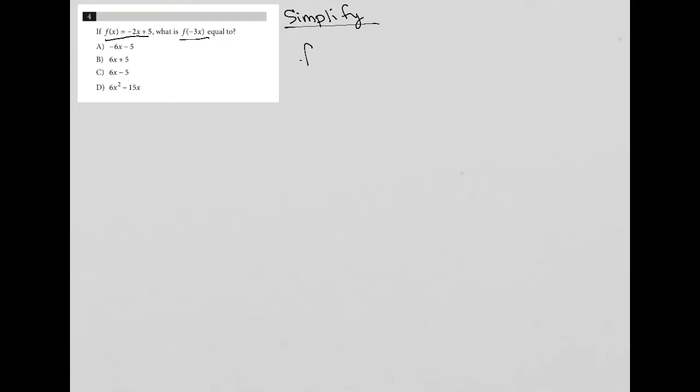So what do we know? We know that f of x is equal to negative 2x plus 5. We're asked to find f of negative 3x.